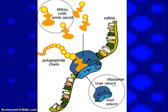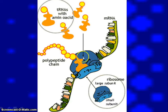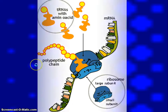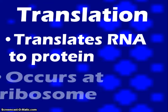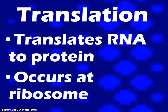This is going to happen at the ribosome. Remember, the rRNA is going to hold the ribosome together — it's two subunits — and the tRNAs are going to bring in the amino acids. So translation translates RNA into a protein, and this process occurs at the ribosome.